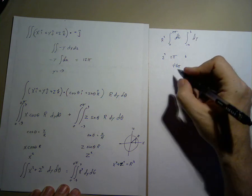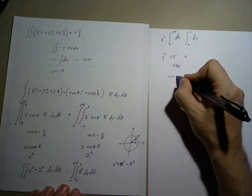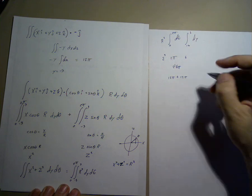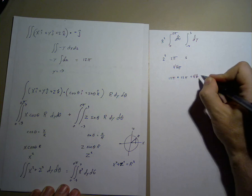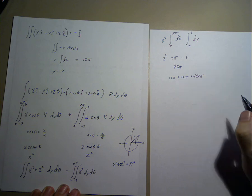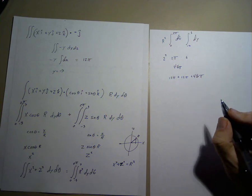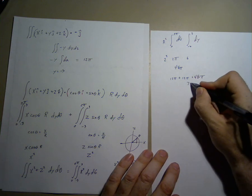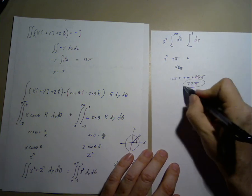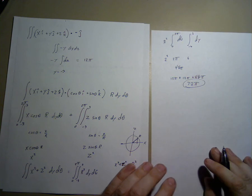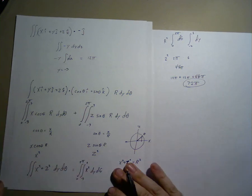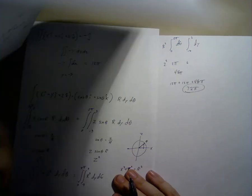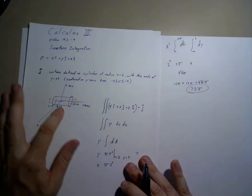Which means we have 12 pi plus 12 pi from our ends, plus 48 pi, gives us 72 pi as the total flux through our surface, being the surface of the cylinder.